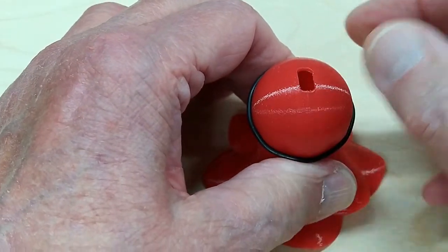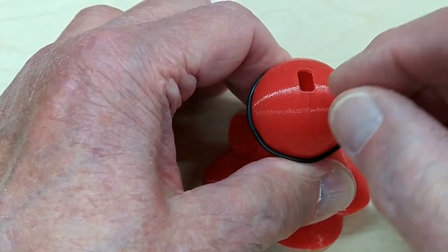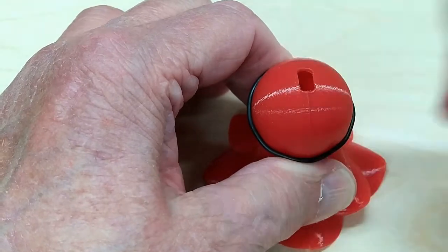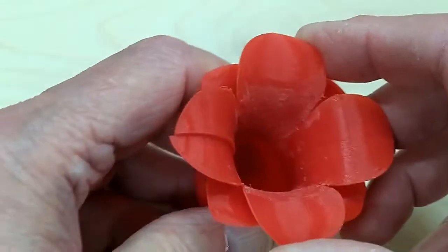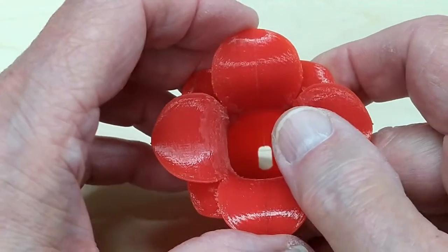O-ring or rubber band around that to kind of help hold that together a little bit. I'm just going to tack a few spots here, let it set up, and then turn it over. Get everything lined up.